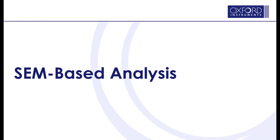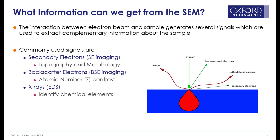SEM-based analysis — so what information can we get from the SEM? When an electron beam hits a sample in a scanning electron microscope, an interaction volume is created from which several different signals are generated. The figure here shows some of the most commonly used signals. The red region is the total interaction volume generated by the electron beam. Electron images are created by detecting the electrons generated from within this region, with different signals coming from different parts of the volume.